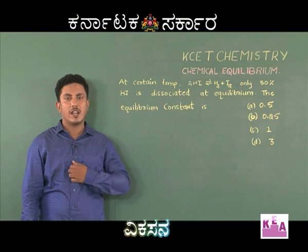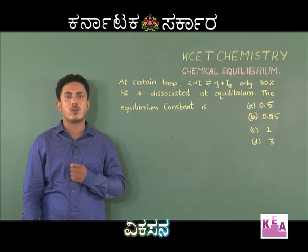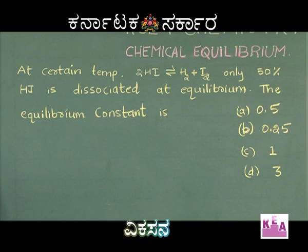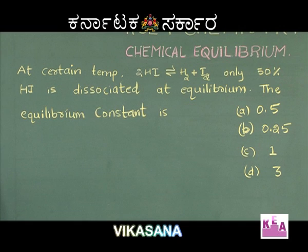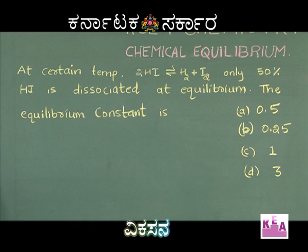Students, the next question is related to the calculation of equilibrium constant. At certain temperature, 2HI is in equilibrium with H₂ plus I₂, and only 50% of HI is dissociated at equilibrium.